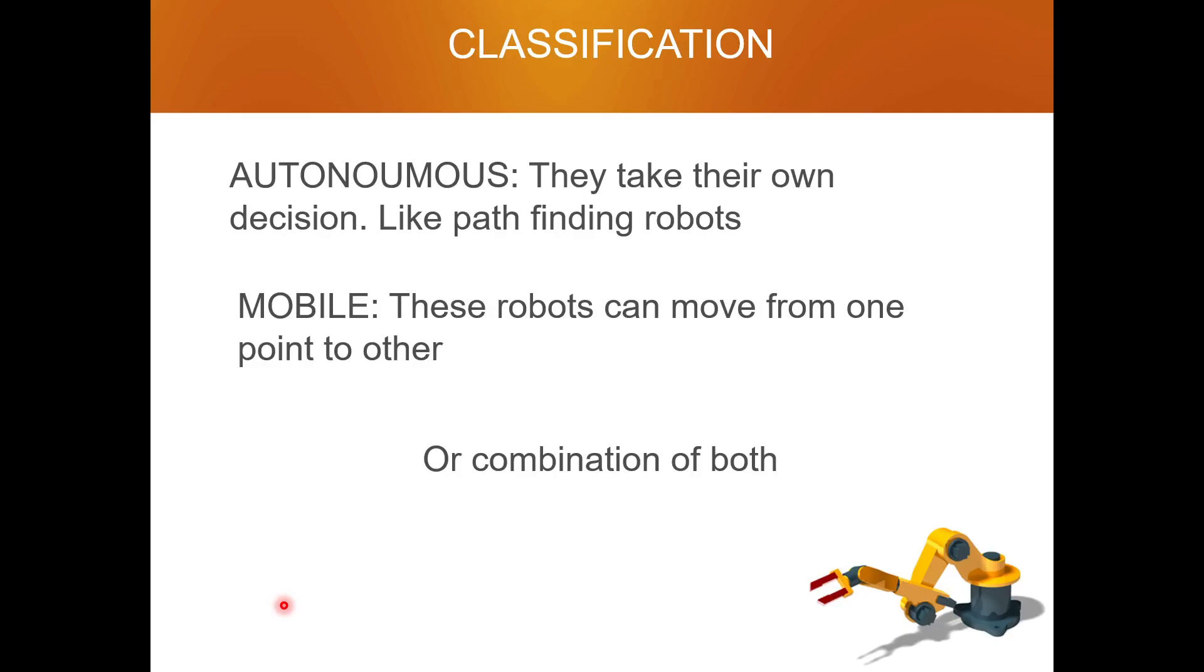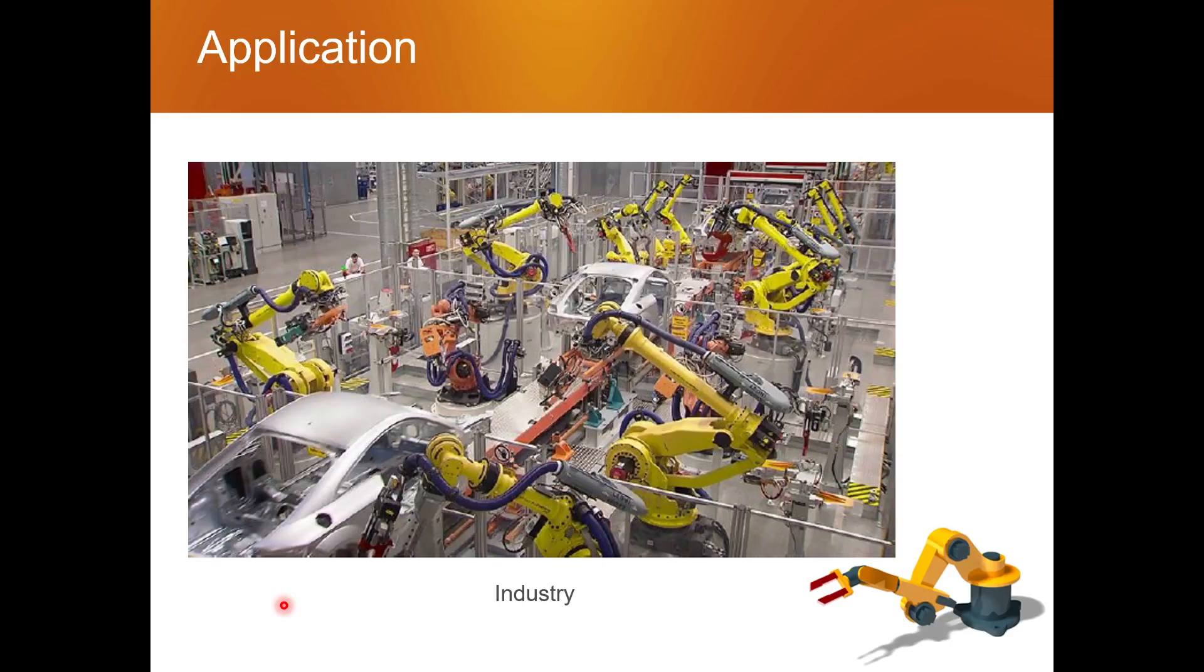You might have seen certain robots that follow specific paths. You can see a video on YouTube of an Amazon store where robots are picking things and placing them back into the rack. They are path-following robots that walk on a certain fixed path. Then we have mobile robots. These robots can move from one point to another but can also be controlled by any user. The third one can be the combination of both.